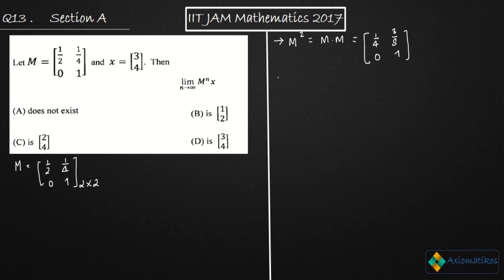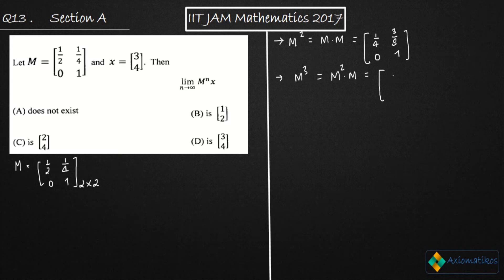My second step is M cubed. For M³ I multiply M²·M. Writing the answer directly: M³ = [[1/8, 7/16], [0, 1]].